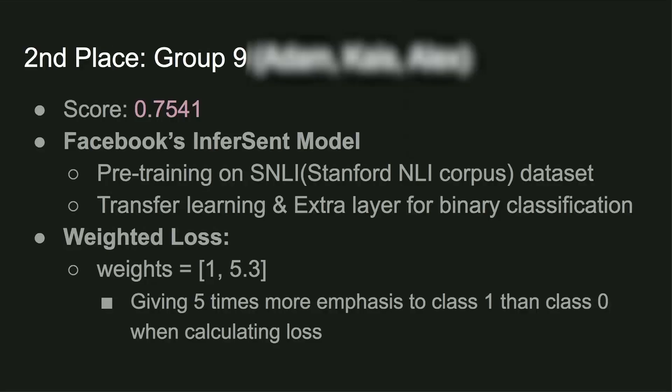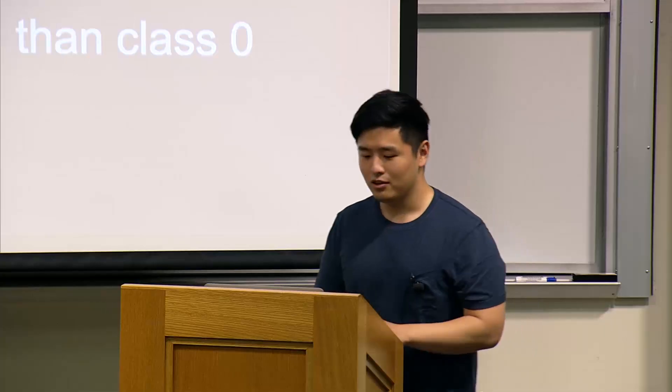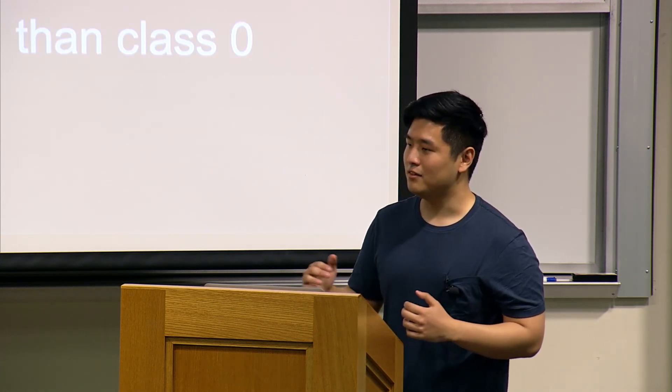Second place goes to Group 9 — congratulations. They got a score of 0.7541. They used Facebook's InferSent model, pre-trained on the Stanford NLI corpus dataset. They transferred the weights and added an extra layer at the end for binary classification. For data imbalance, they used weighted loss, setting the weights to 1 and 5.3 — giving 5 times more emphasis to class 1 than class 0. Both top submissions used transfer learning and some type of weighting to balance out the data imbalance.